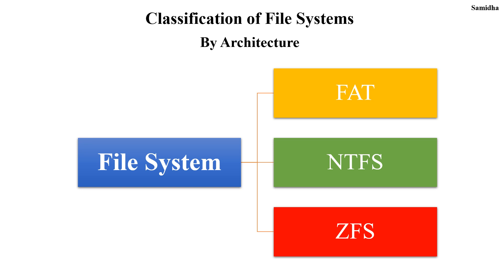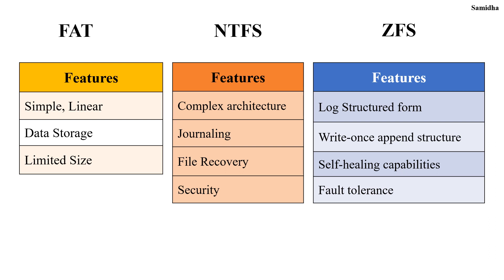Next is classification of file systems. File systems are classified based on their architecture, access method and functionality. Based on architecture, file systems have evolved over time from simpler ones like FAT to more advanced systems like NTFS and ZFS. We will see each one in detail.